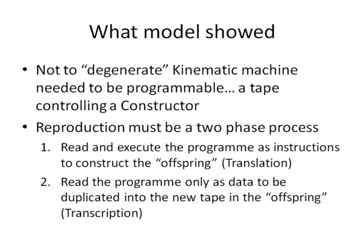So what did von Neumann find in this kinematic model? He found that to save the system from degenerating, and also to solve the problem of self-referencing, he needed to make a machine that reproduced itself in two phases. First, one that would read and execute the program as instructions to the constructor unit to produce the offspring — this is a translation process for the blueprint. Second, to read the program only as data, not as something to be executed, and to duplicate that data in a new tape in the offspring — this is the process of transcription. Translation and transcription are the key processes that were later discovered in DNA.